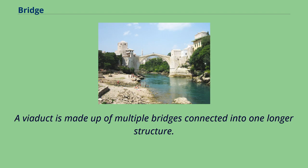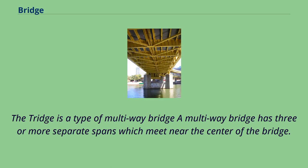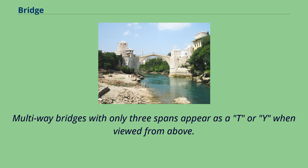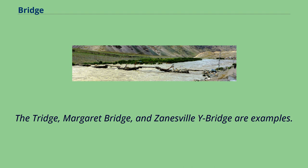A viaduct is made up of multiple bridges connected into one longer structure. The longest and some of the highest bridges are viaducts, such as the Lake Pontchartrain Causeway and Millau Viaduct. The tridge is a type of multi-way bridge. A multi-way bridge has three or more separate spans which meet near the center of the bridge. Multi-way bridges with only three spans appear as a T or Y when viewed from above, and are extremely rare. The tridge, Margaret Bridge, and Zanesville Y Bridge are examples.